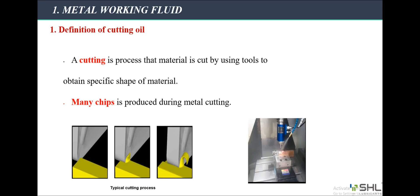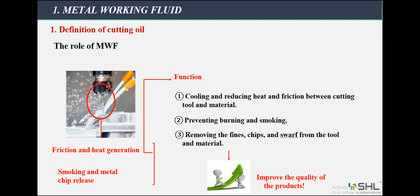About the definition of cutting: cutting is a process where material is cut using tools to obtain a specific shape. Many chips are produced during metal cutting. About the function of cutting oil: when processing metal, problems often arise such as wear, heat generation, smoke, and lots of chips. Cutting oil functions include cooling, reducing heat and friction between the cutting tool and material, preventing burning and smoking, and removing fine chips and swarf from the tool and material. All of these functions contribute to improving the quality of the product.